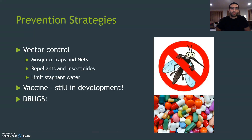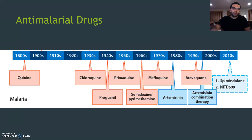Now looking at prevention strategies: you can control the mosquitoes with mosquito traps and nets, and use repellents and insecticides, and limit stagnant water. Also, there's a vaccine, but we don't actually have one yet — that's still in development, though it's a very appealing strategy for malaria prevention. And then there's drugs, which I'm going to be talking about here.